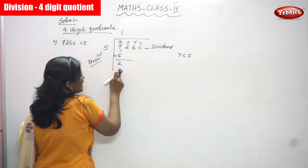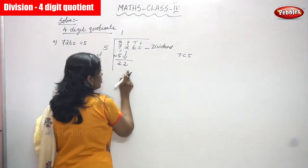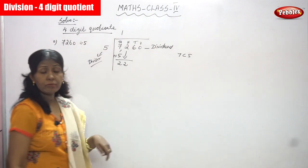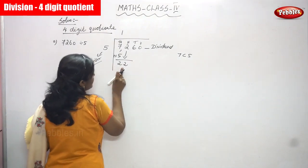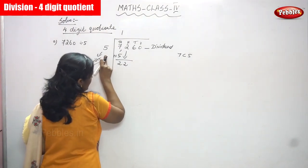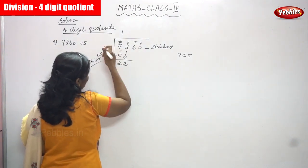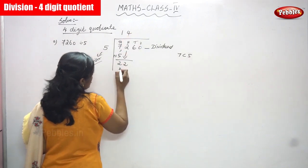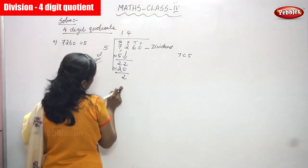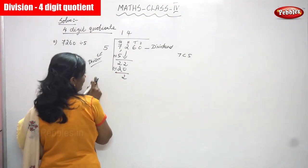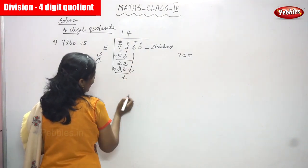Next, compare two and five — two is lesser than five, so you can't divide. You have to bring down the next digit, which is two. This becomes 22. Twenty-two is greater than five, so how many times does five go into 22? Four fives are 20. Subtract: 22 minus 20 gives two. Compare two and five — two is lesser than five, so you can't divide. Bring down the next tens place digit, which is six.